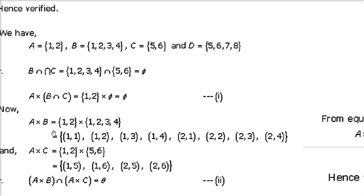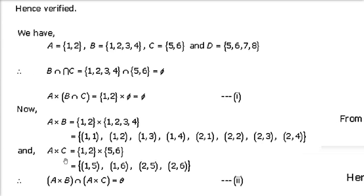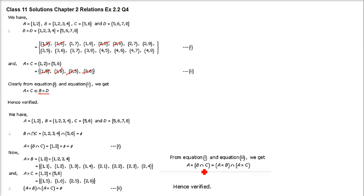Now taking the right hand side: A is {1,2}, B is {1,2,3,4}. A cross B gives: (1,1),(1,2),(1,3),(1,4),(2,1),(2,2),(2,3),(2,4). A cross C gives: (1,5),(1,6),(2,5),(2,6). Taking the intersection of these two sets — nothing is common between them — so the result is also empty. Both sides give empty, hence verified.